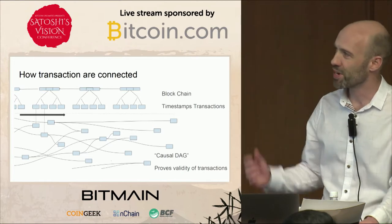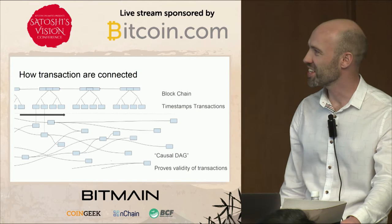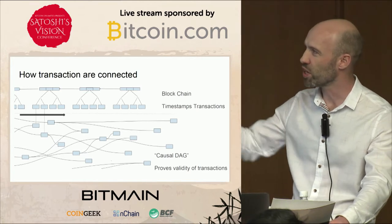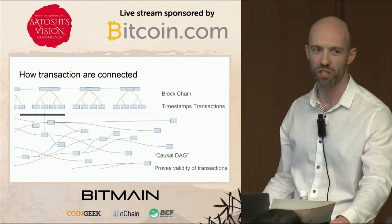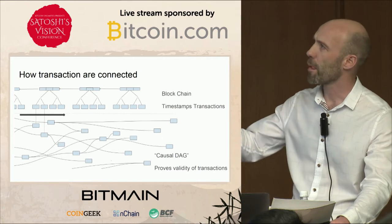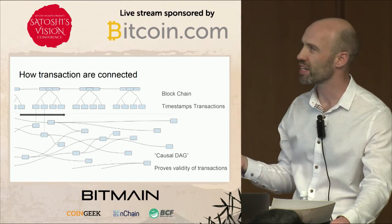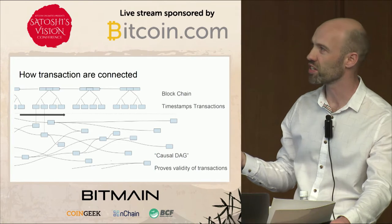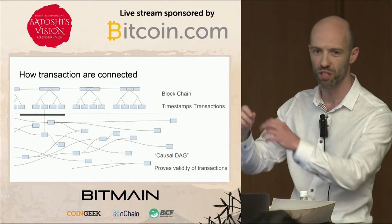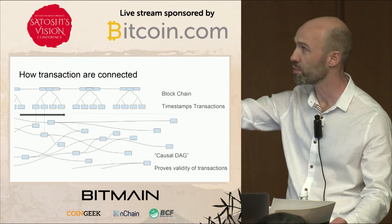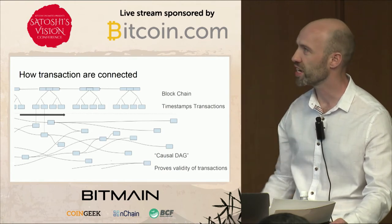This is my mental concept — hopefully you guys can understand this diagram. The little squares are supposed to be transactions. At the top, that's kind of like what we'd probably imagine the blockchain looks like: a bunch of transactions put into Merkle trees, the Merkle root in the block header. The block headers all point back to each other, forming a chain.